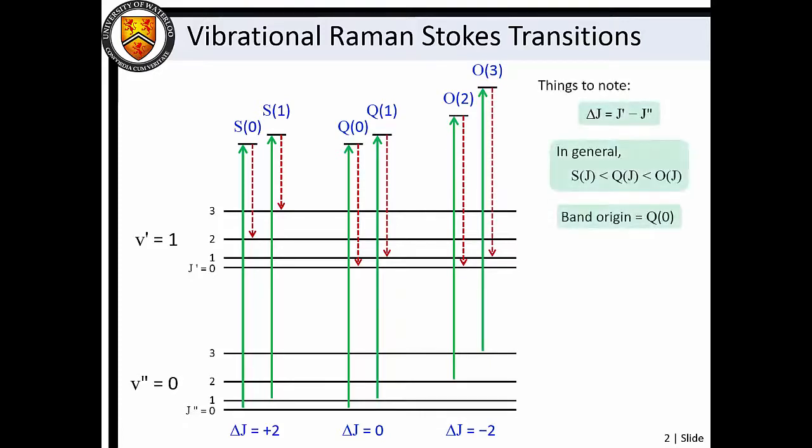Note that delta J is defined as the excited state J value minus the lower state J value. Thus vibrational Stokes bands exhibit an S branch to low wave number, an O branch to higher wave number, and a central Q branch.